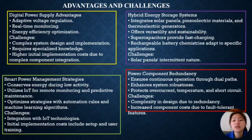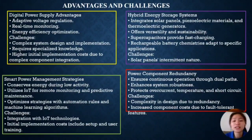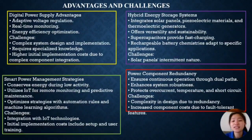Challenges include the intermittent nature of solar energy. For smart power management strategy: conserve energy during low activity, utilize IoT for remote monitoring and predictive maintenance, and optimize strategy with automation rules and machine learning algorithms. Challenges include integration with IoT technology and initial implementation costs including setup and user training. For power component redundancy: ensure continuous operation through redundant parts and enhance system robustness. Protect against overcurrent, temperature, and short circuit conditions. Challenges include complexity in design due to redundancy and increased component costs due to fault tolerance features.